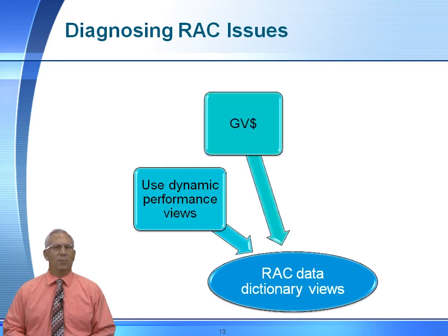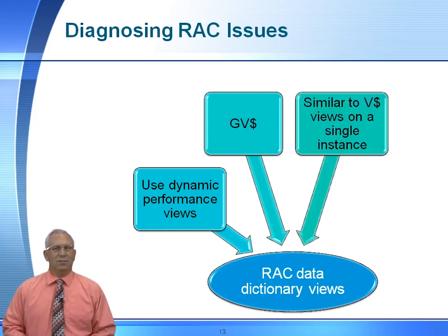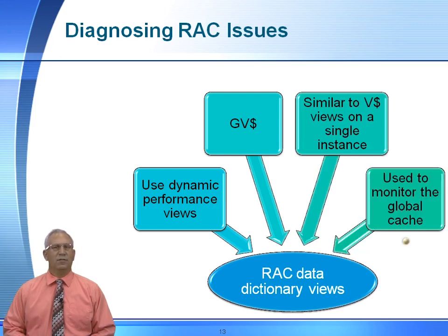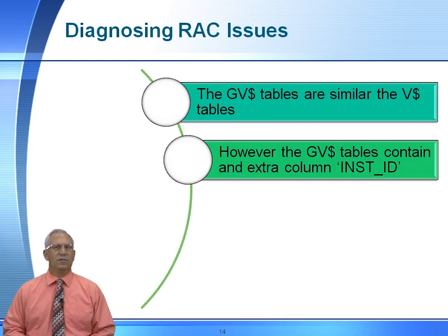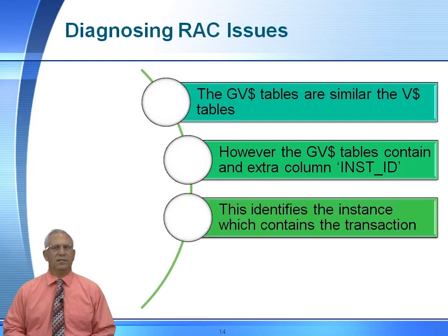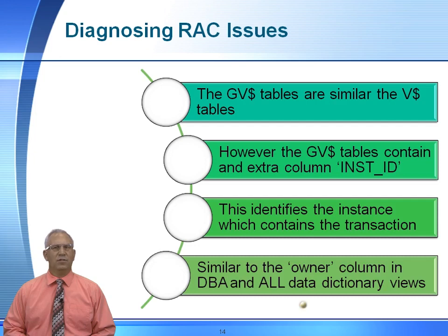We can also use the RAC dynamic performance views to determine RAC performance information. You can look at system events, wait events, SGAs, active session history. These are going to be the same as your V$ views, with the exception that they will have a specific column for instance ID. The GV$ views give you information on what's currently going on within your RAC environment. The big difference is that GV$ tables contain this extra column called instance ID, which gives you instance-specific information and enables you to write aggregate functions with group by clauses to group things by specific instance ID. So if you want to trace down a specific action for a specific user on a specific server, you can do that with the GV$ views.